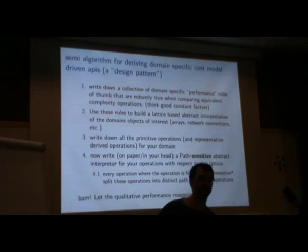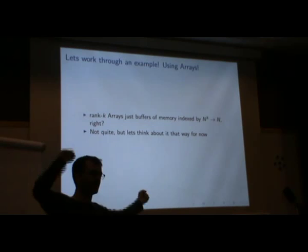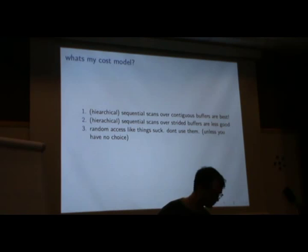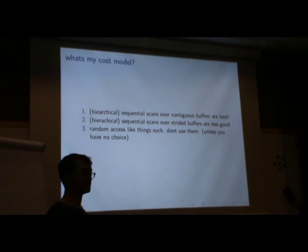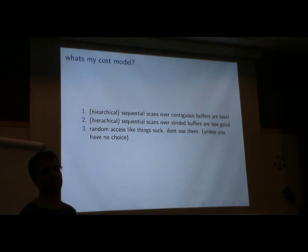Let's talk about this with some simple examples in array computation. A good stick-figure model of arrays is you have a buffer and a way of translating some x, y coordinate into an array offset. What's my cost model? Sequential scans over contiguous pieces of memory are the best. Doing strided axes in memory - hierarchical or not - aren't quite as good, but they're okay. And random access sucks - just don't do it unless you really have to. So what's my lattice? I can talk about what is the mapping from my x, y coordinates to positions in some flat memory buffer.